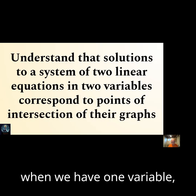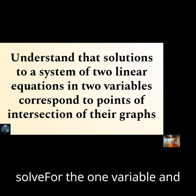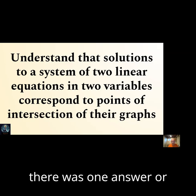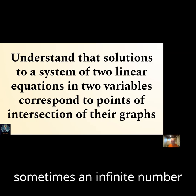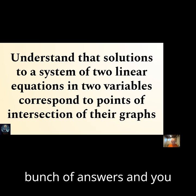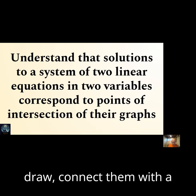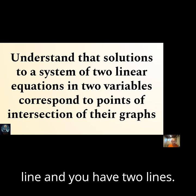First of all, when we had one variable, like 25 equals 3x minus 2, then we solve for the one variable and there was one answer, or sometimes no answer, or sometimes an infinite number of answers. Two variables means each equation is going to have a bunch of answers and you string those together and draw, connect them with a line, and you have two lines.